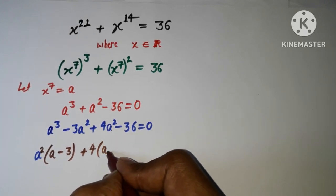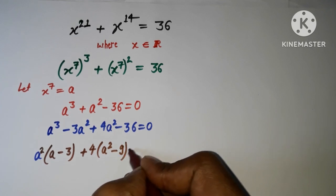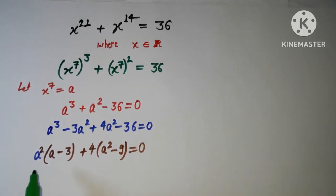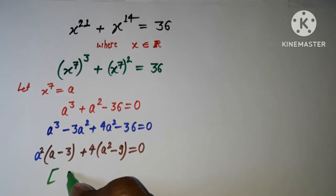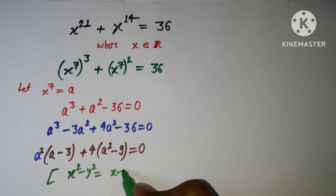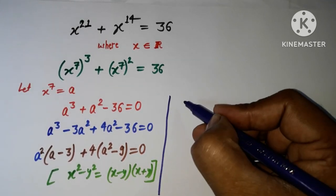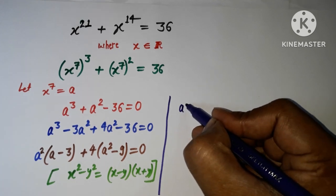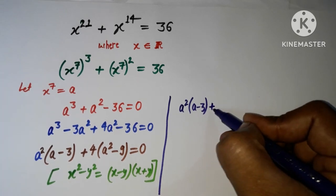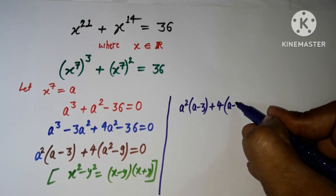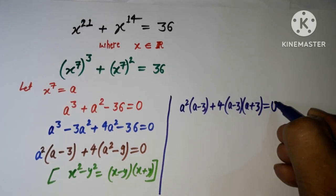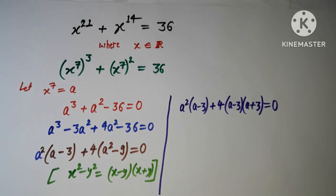This gives me 4(a² − 9) = 0. Now I apply the difference of squares formula: x² − y² = (x − y)(x + y). So a² − 9 becomes (a − 3)(a + 3). The expression is now a²(a − 3) plus 4(a − 3)(a + 3) equals 0.